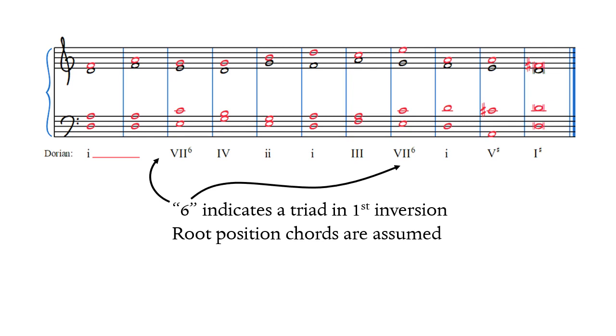This labeling packs a lot of information into a short space. It tells us the exact combination of scale degrees in each chord, the chord quality, and whether the chord is voiced in root position or in inversion. If we need to, figured bass symbols can be used to show accidentals, such as the leading tone in the penultimate V chord and the Picardy 3rd in the final I chord.